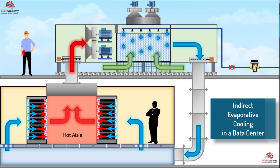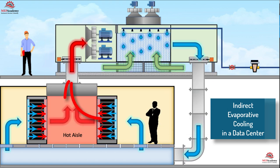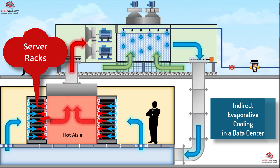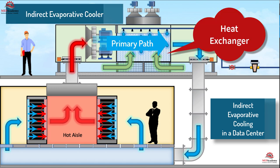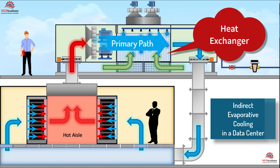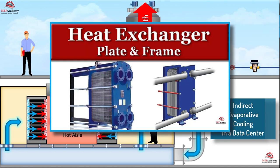Indirect evaporative cooling in a data center. An indirect evaporative cooler can be used to cool a data center while saving large amounts of energy. See our video on data centers for a better explanation of the systems used for cooling data centers. Hot air from the servers is captured in a hot aisle and brought into the indirect evaporative cooler, where it travels through the primary side of the heat exchanger, where it gives up its heat to the secondary side. See our video on heat exchangers for a better understanding of plate and frame heat exchangers.